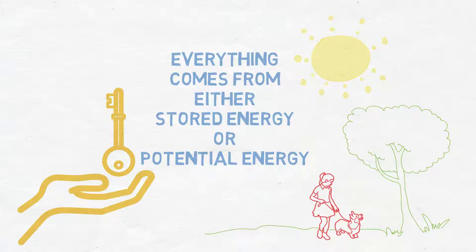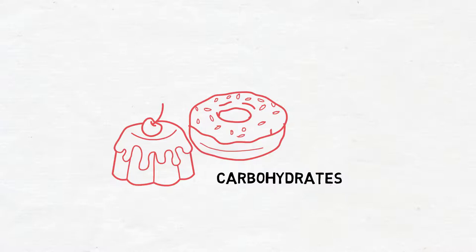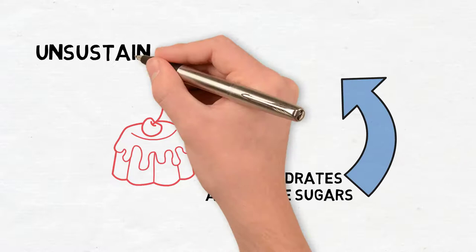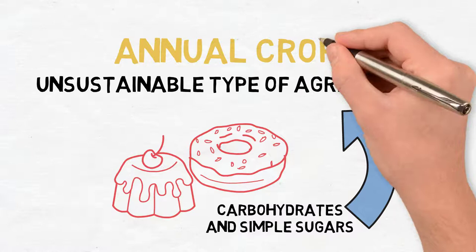So when we choose to use more carbohydrates and simple sugars, we choose an unsustainable type of agriculture because it's based on annual crops.